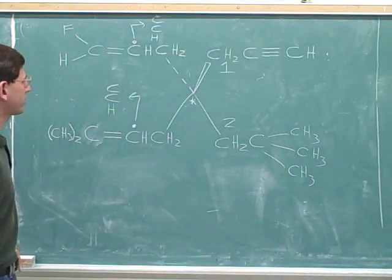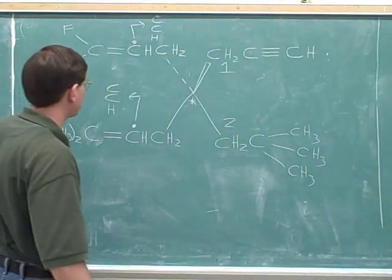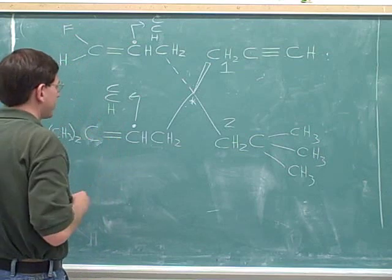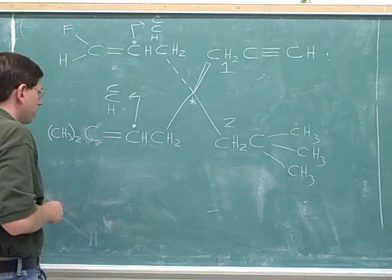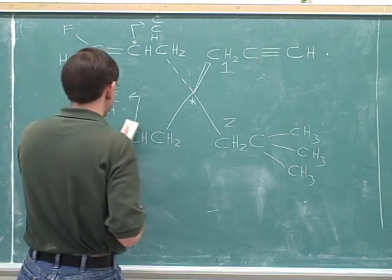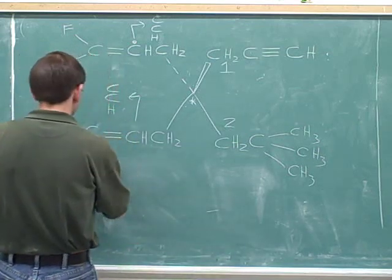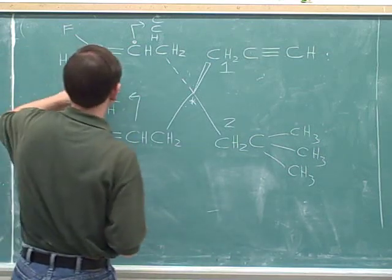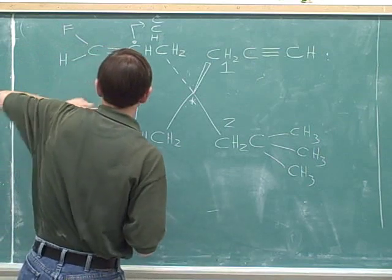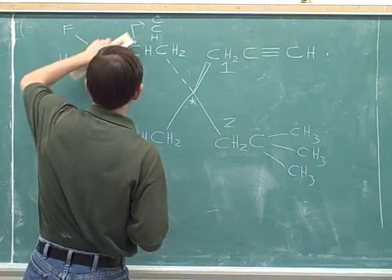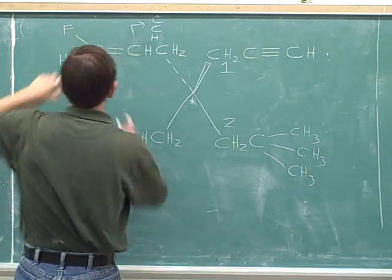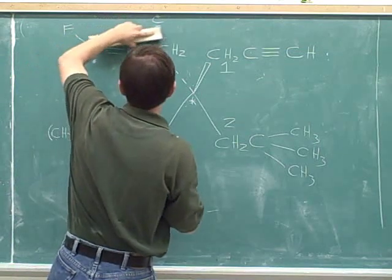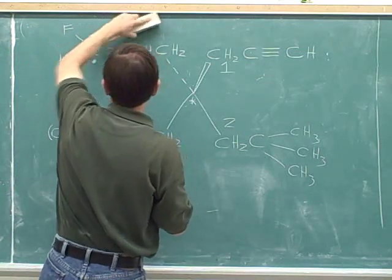We still have a tie between the two groups on the left. To break that tie, I'm going to erase this dot and move the dot one step further out, and erase this list. Then erase this dot and move it one step further out, and erase this list.